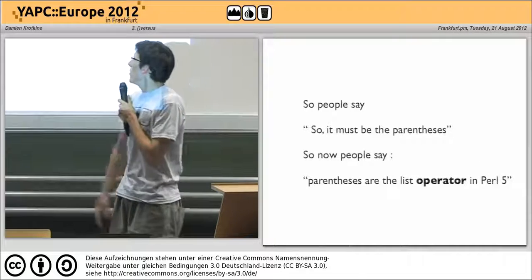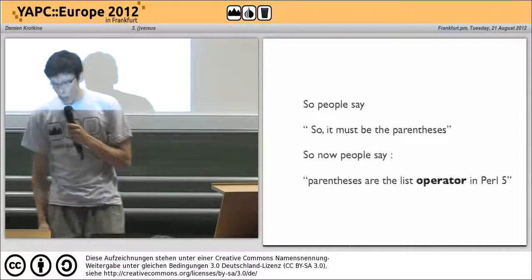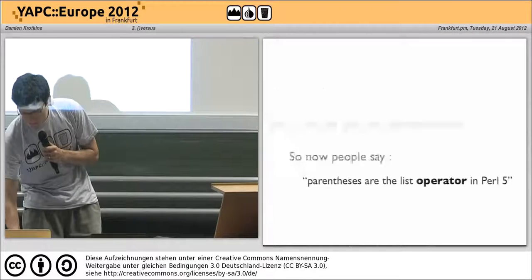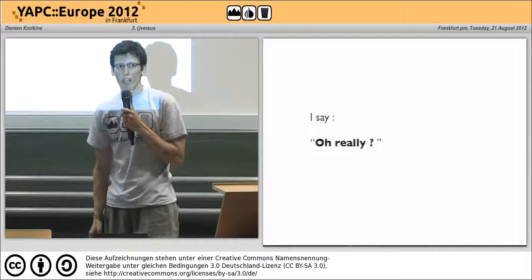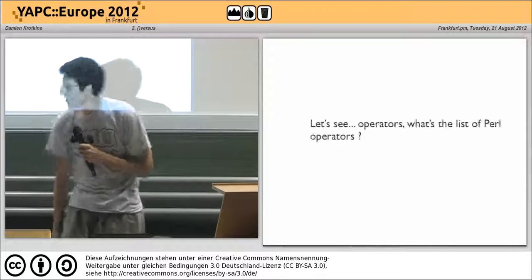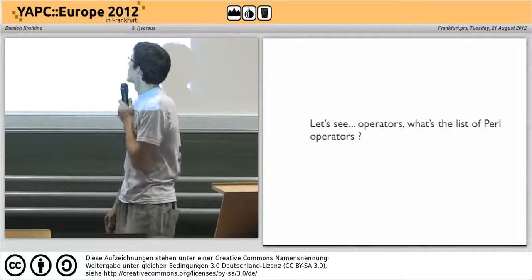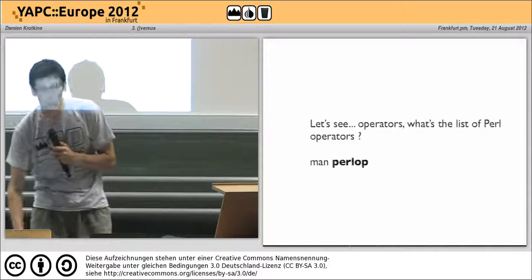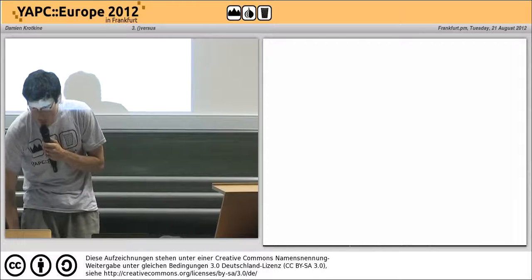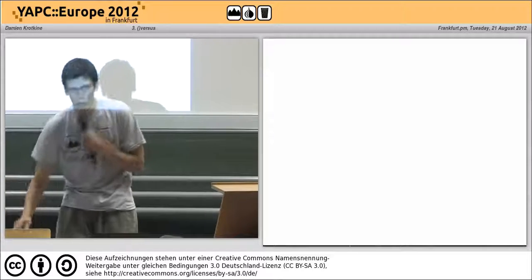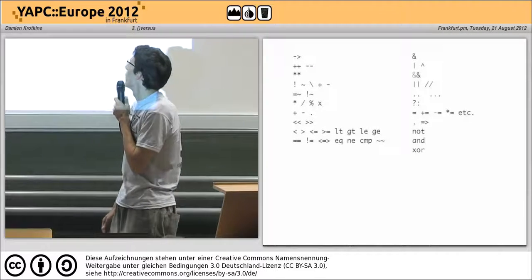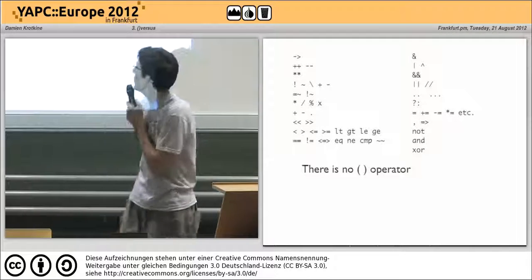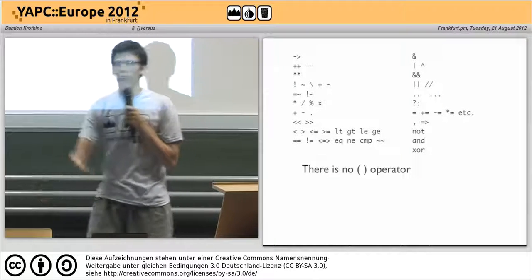So people say it must be the parentheses, so parentheses are the list operator in Perl 5. I say, oh really? Let's see — operators. What's the list of Perl operators? Man perlop, or perldoc, or whatever. A white screen. Wow. There is no parens operator, unless you see one.